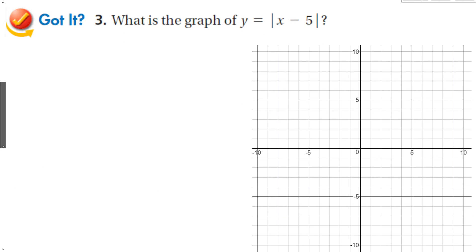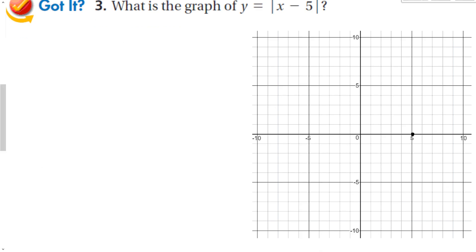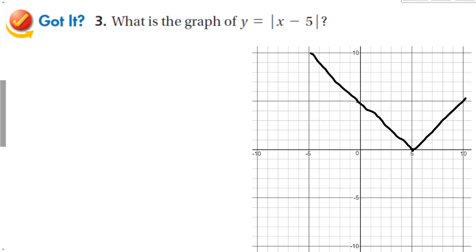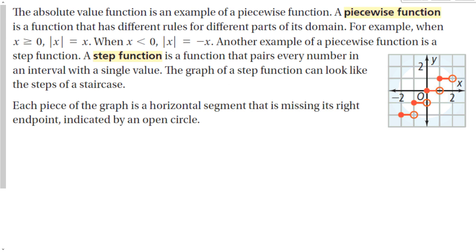If I subtract 5 inside the function, it's going to shift the graph 5 to the right, so I can make a quick easy graph just like that. This gets more complicated for absolute value functions that have a number in front — either in front of the whole expression or inside in front of x — because that changes the slope. That's something we'll look at later.